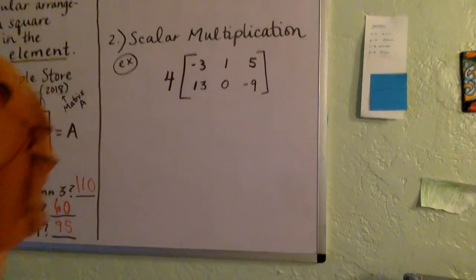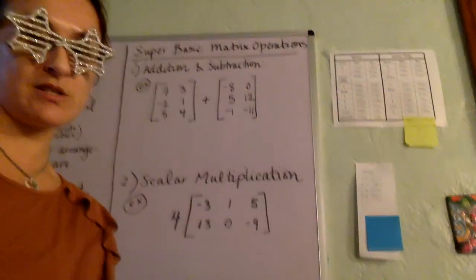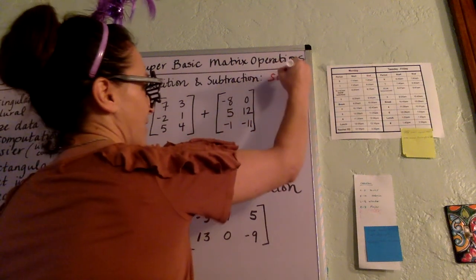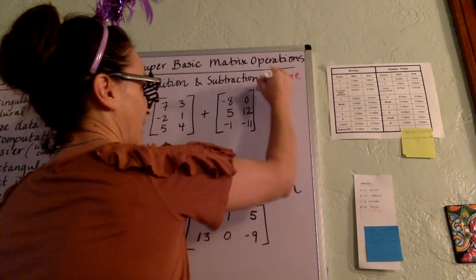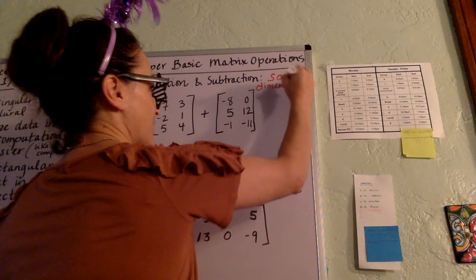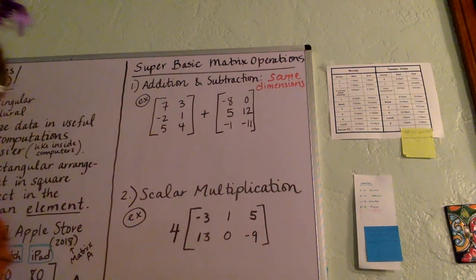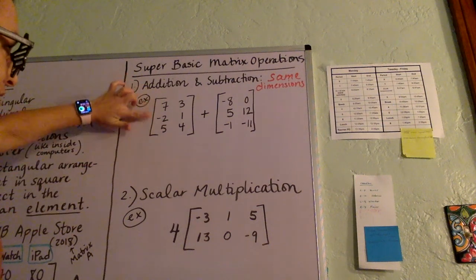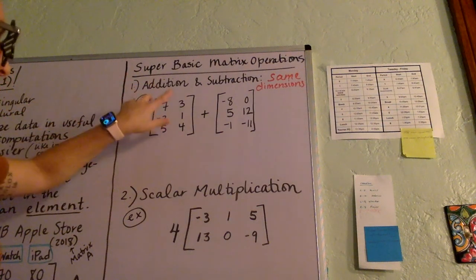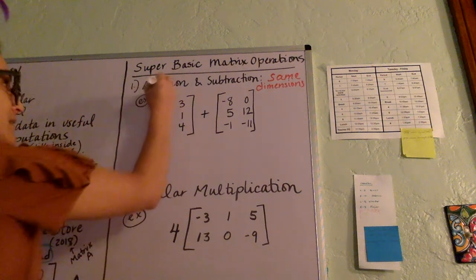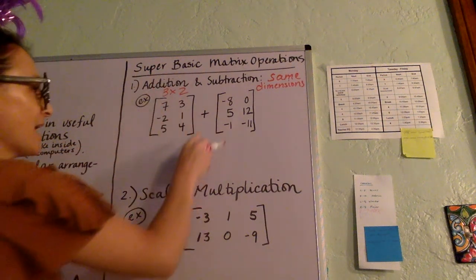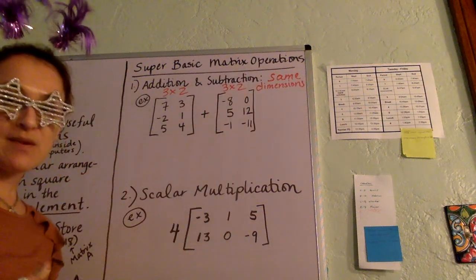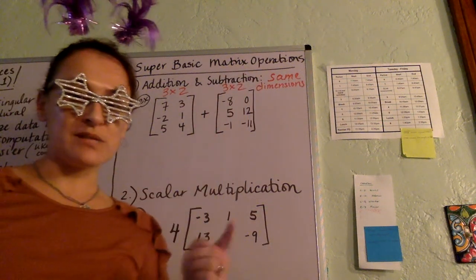Now let's just move over here and let's talk about operations, just super basic operations. So number one, when you are adding and subtracting, you must have two matrices that are same dimensions. So let's just talk about this one. There's one, two, three rows, and one, two columns. So this is a three by two, and this is a three by two as well. They must match in order for you to add or subtract.